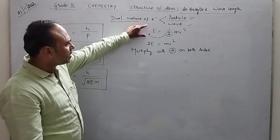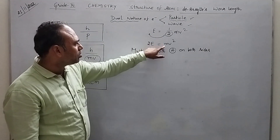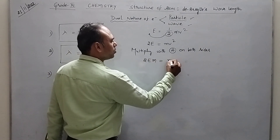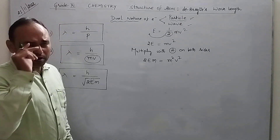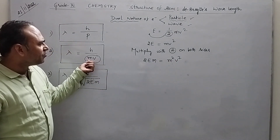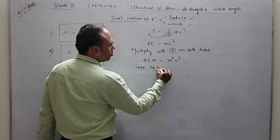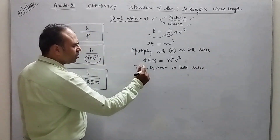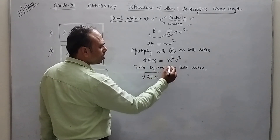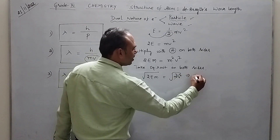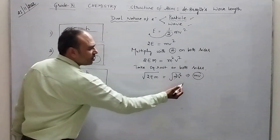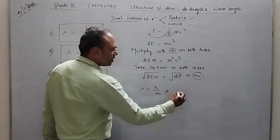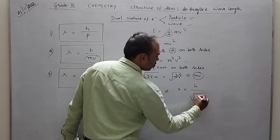We took kinetic energy as half MV squared. Sending to the other side, you get 2E is equal to MV squared. Now multiplying with M on both sides, we get 2 kinetic energy into mass is equal to M squared V squared. So M squared V squared — we want to convert into MV, so we take square root on both sides. On taking square root, root 2EM is equal to MV. So finally we got the value of MV, which is root of 2EM. Therefore, lambda is equal to H by MV can also be written as lambda is equal to H by root of 2EM, where E is kinetic energy of the particle.